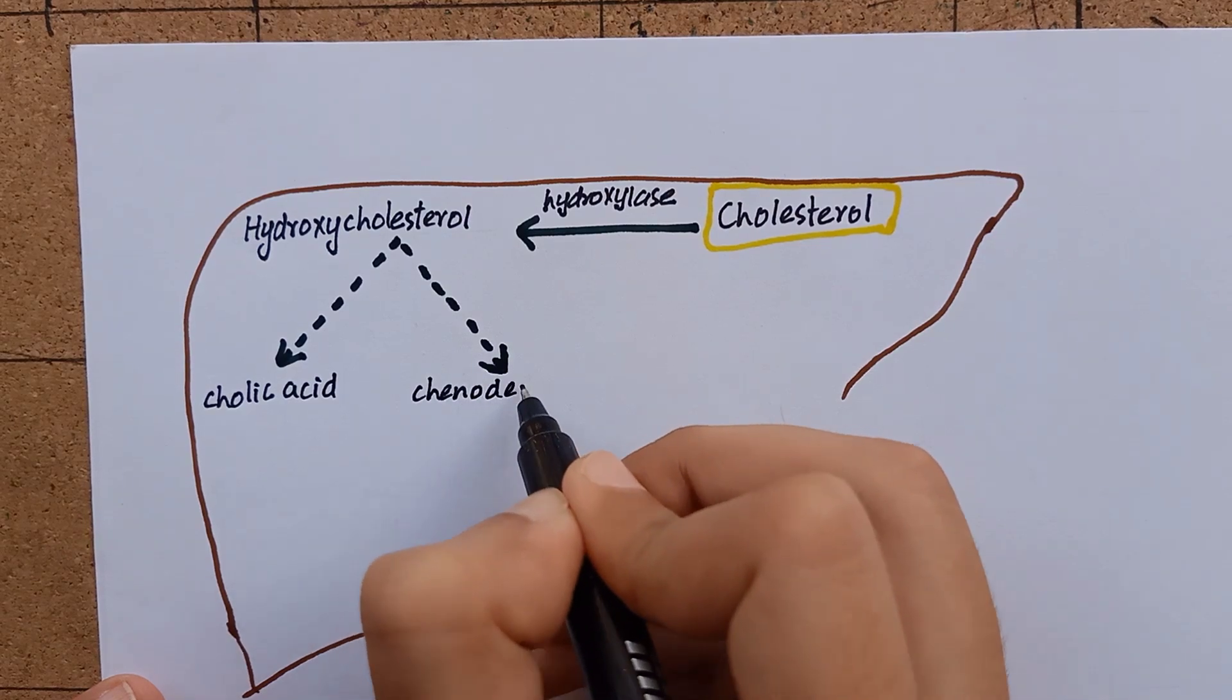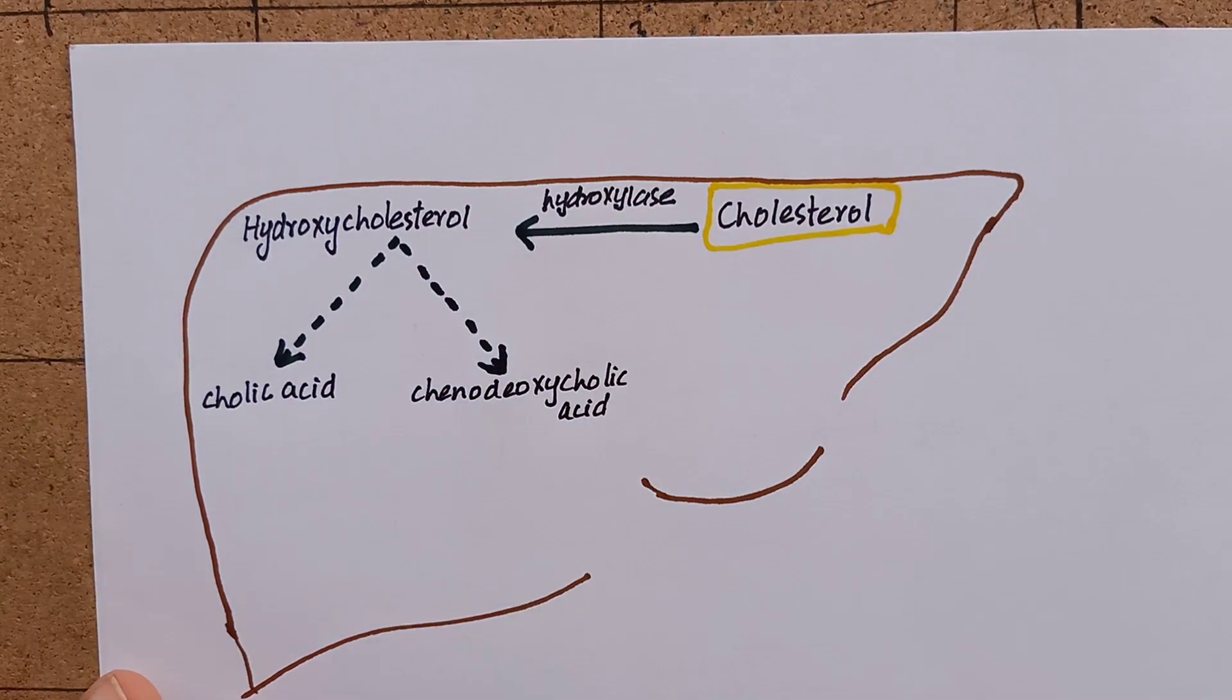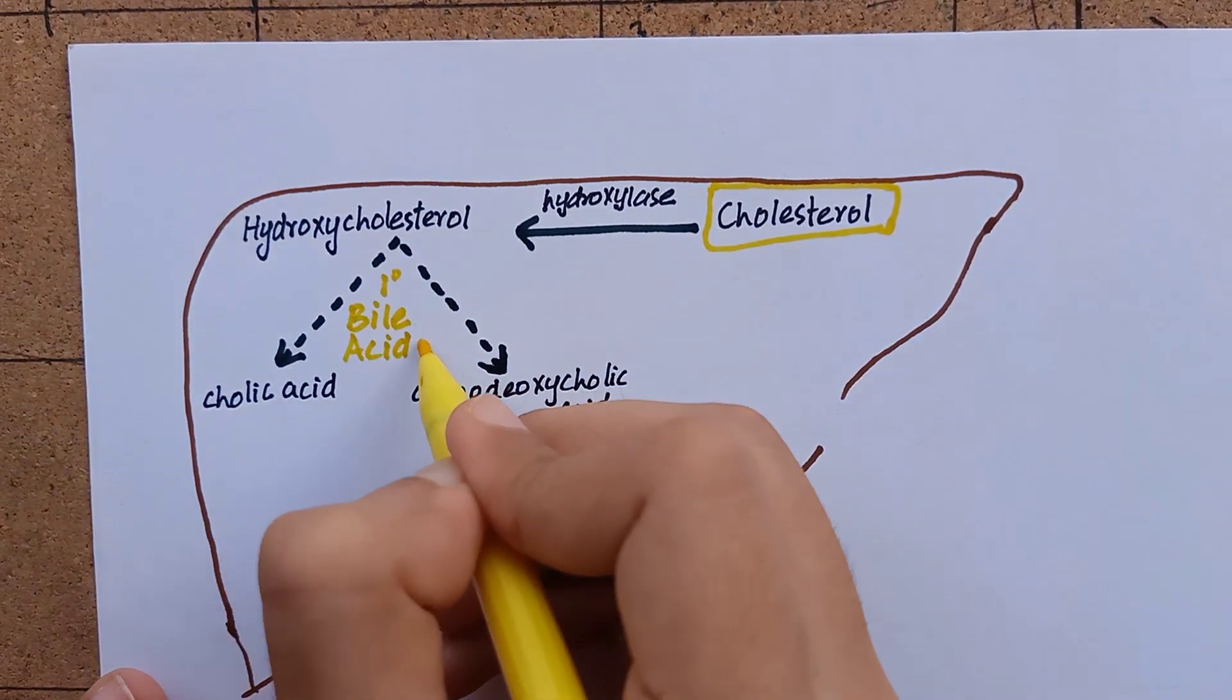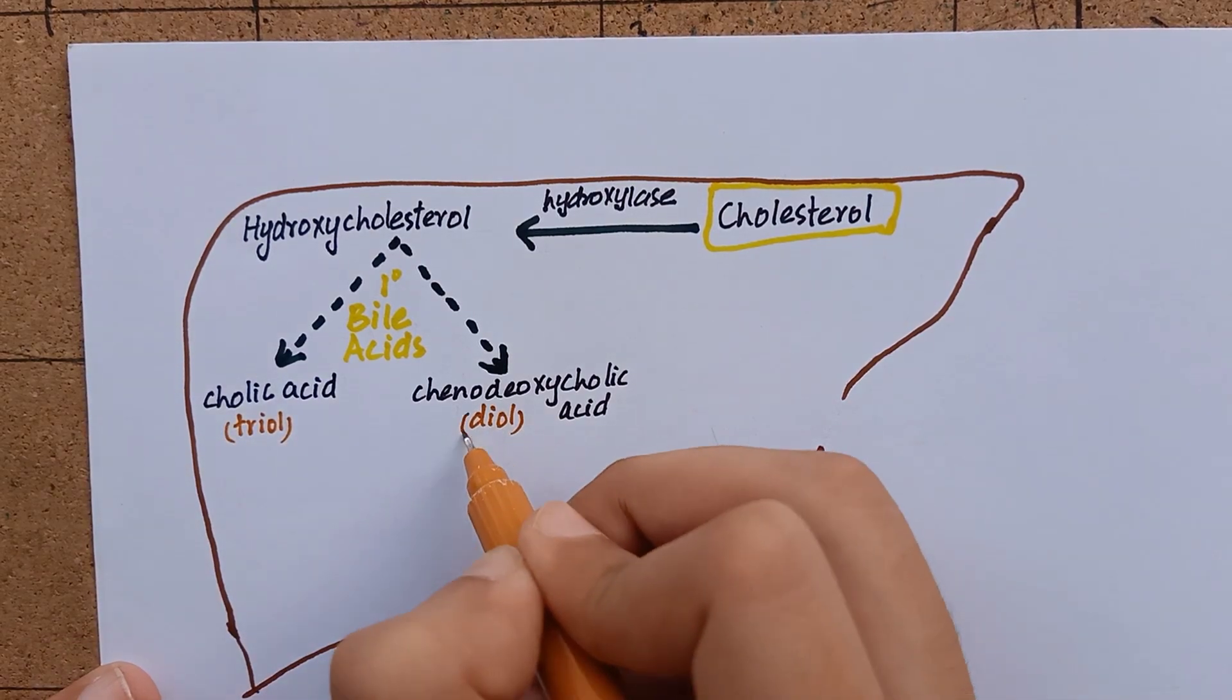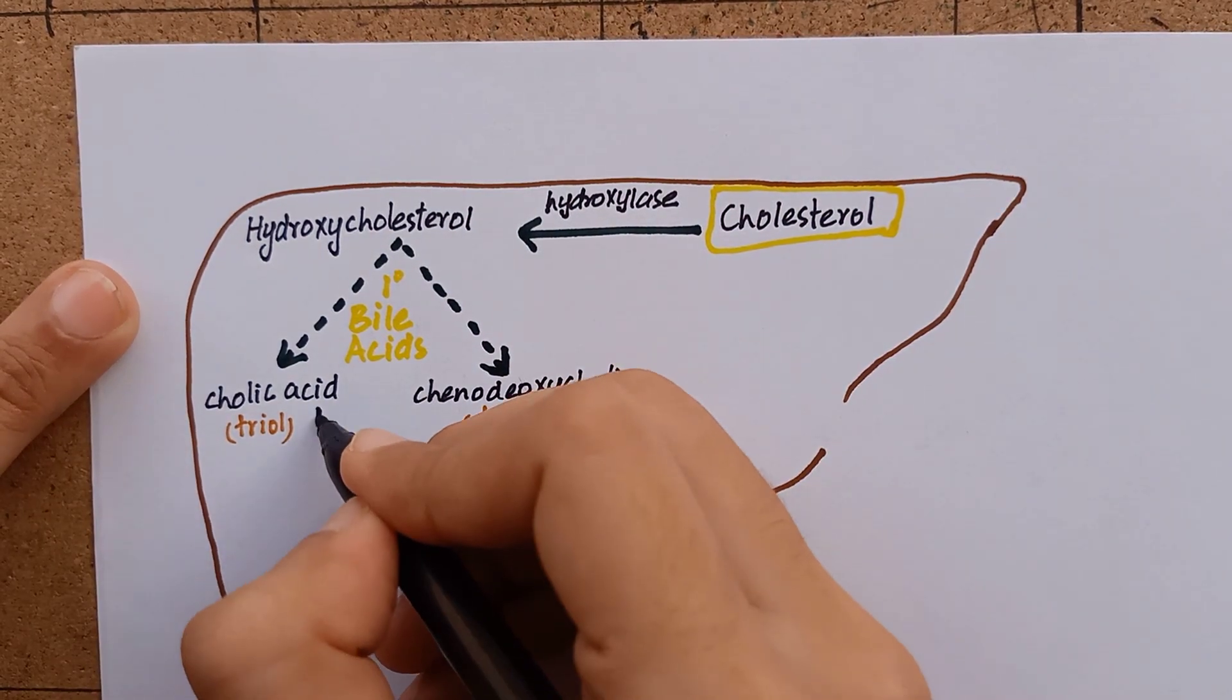Cholic acid and chenodeoxycholic acid are the primary bile acids produced from cholesterol. Cholic acid is a triol having three hydroxyl groups, while chenodeoxycholic acid is a diol having two hydroxyl groups.